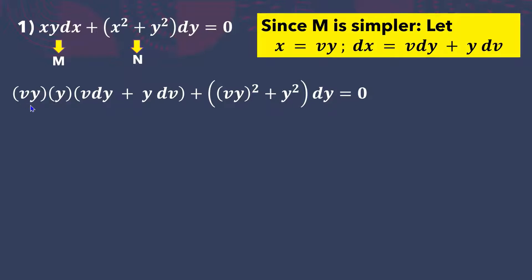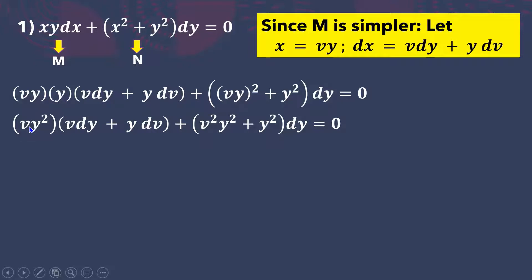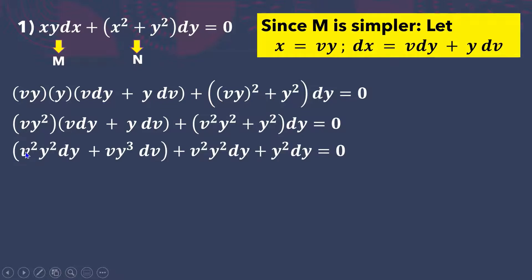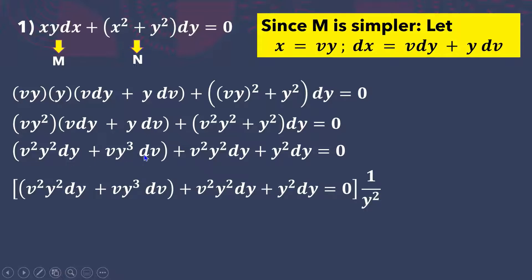Now simplify: multiplying vy and y gives vy squared. Then we have v squared y squared. So simplifying further, distributing vy squared into the binomial and dy into the binomial, this becomes v squared y squared dy plus vy cubed dv plus v squared y squared dy plus y squared dy equals zero. You will notice all terms have y squared, so we can factor out y squared by multiplying both sides by 1 over y squared.